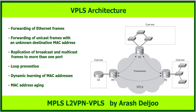If a CE router at one site sends a broadcast frame to the PE router, the frame is replicated and forwarded to all physical ports on that PE belonging to that VPLS instance, but also to all pseudo-wires associated with that VPLS instance — meaning to all other customer sites. Multicast frames are replicated and forwarded to all physical ports that are part of the multicast group, and to all pseudo-wires. When forwarding broadcast frames, it is important to flood the frame throughout the broadcast domain.